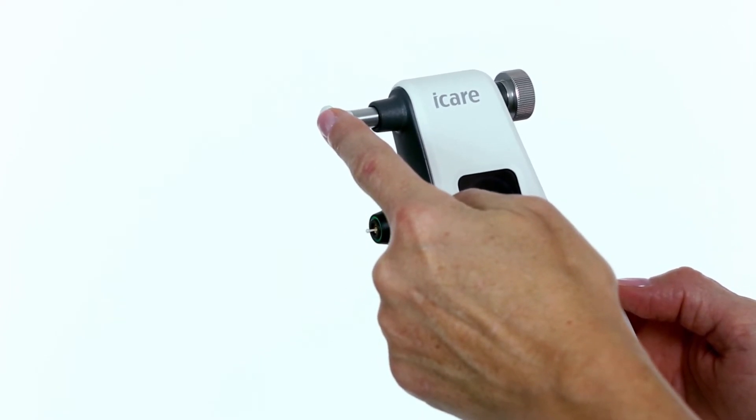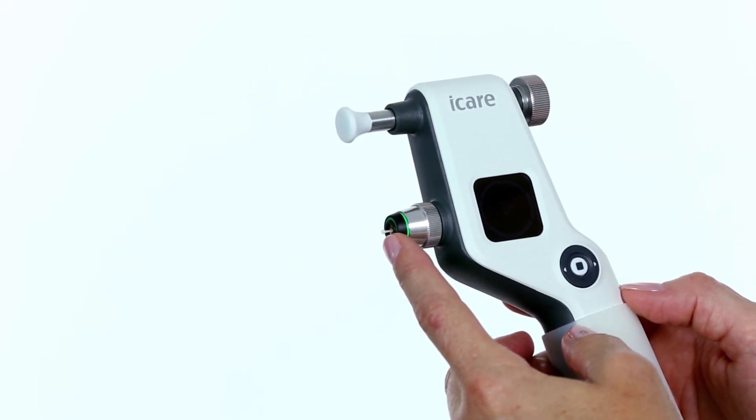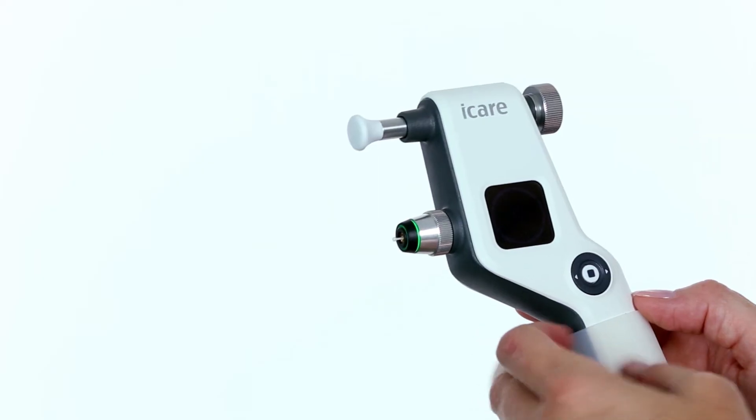Place the forehead support on the patient's forehead. Aim the probe in the center of eye. The distance of the probe to the cornea should be four to eight millimeters.